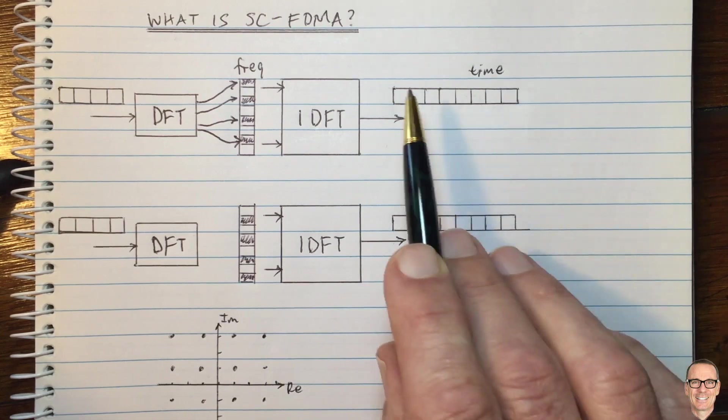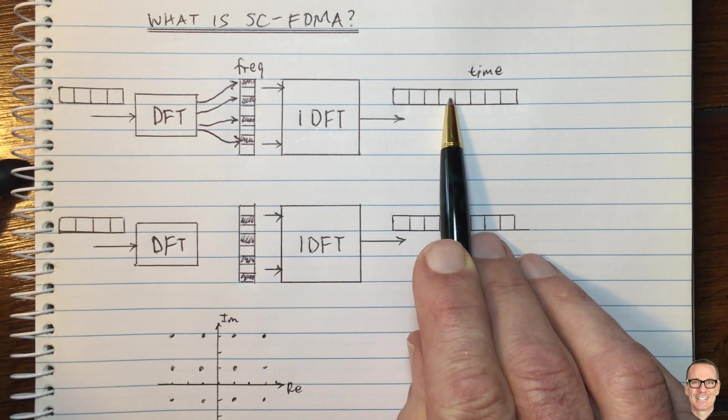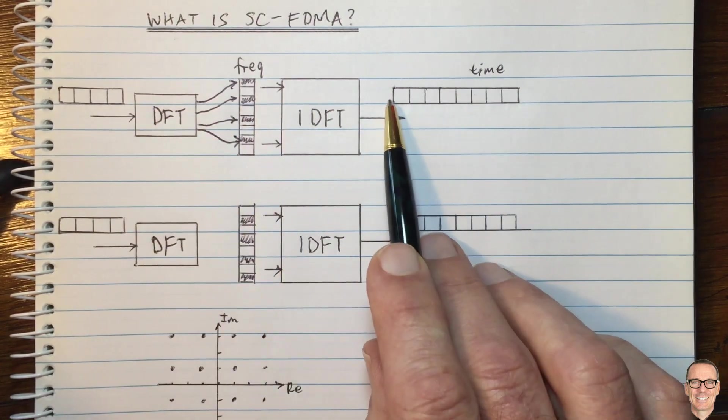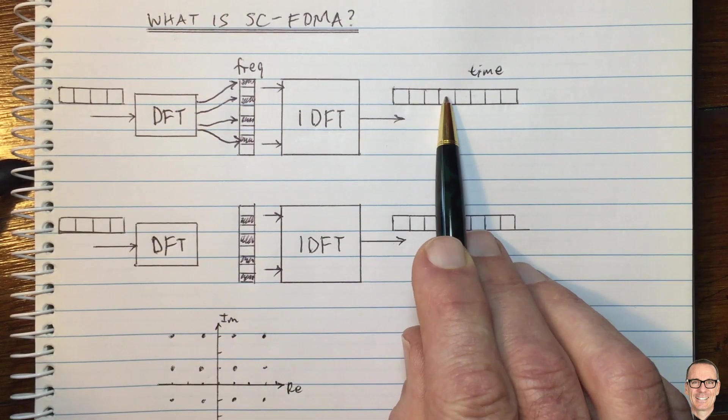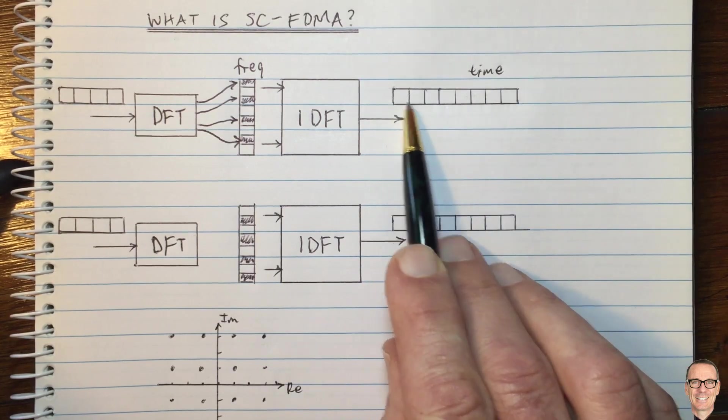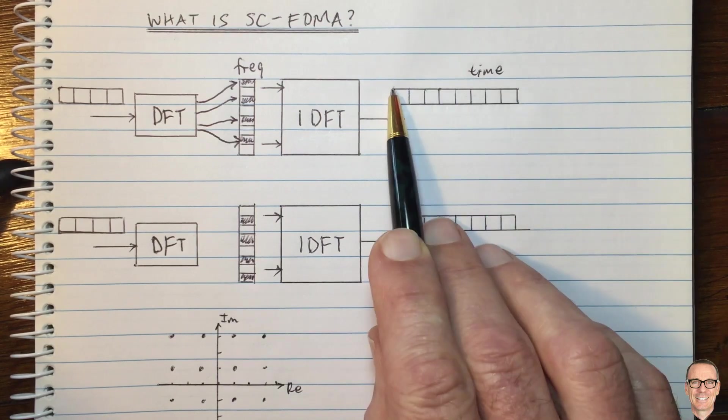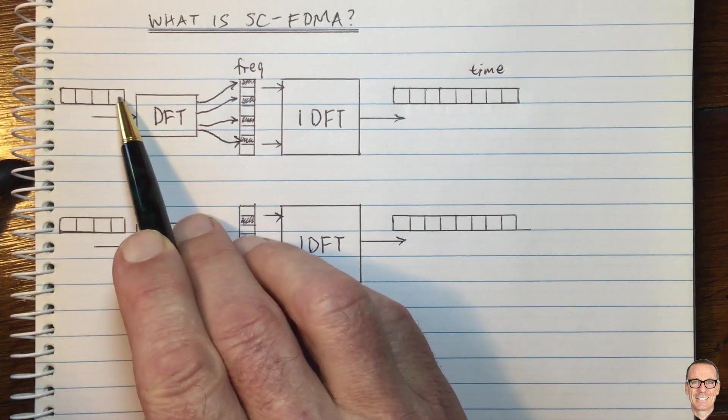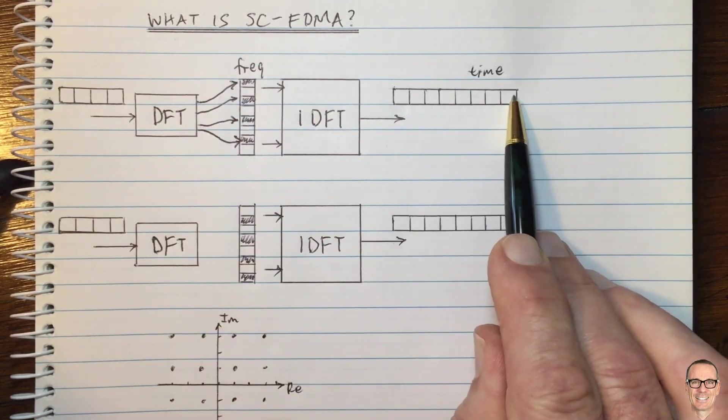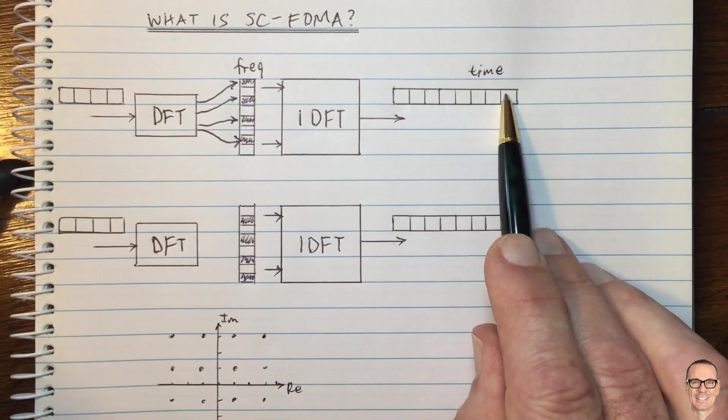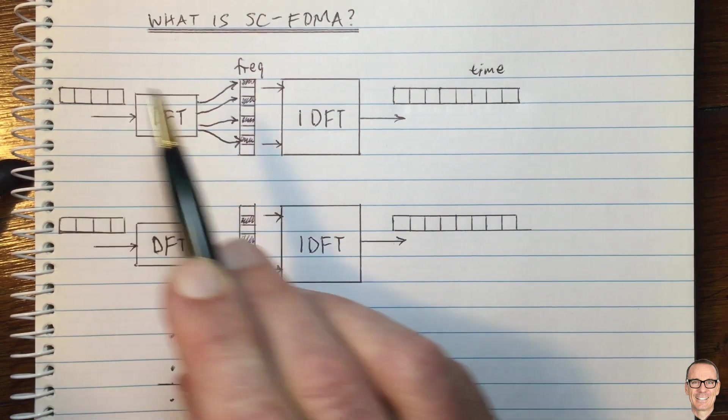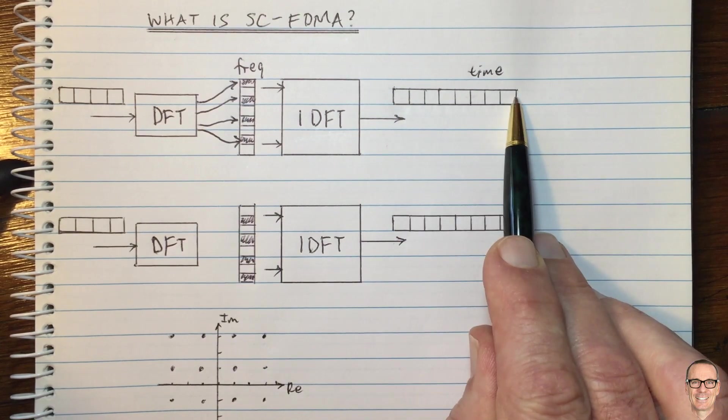So what's going to happen in the time domain is you're going to get a repeat of this sequence here. So this sequence here is now going to be sent in the first four slots here and then repeated in the next four slots. And this whole sequence is sent over the same time period as this sequence is here. So because of that same time sequence, I've drawn it being longer here, but that's just because there's more elements in this vector.